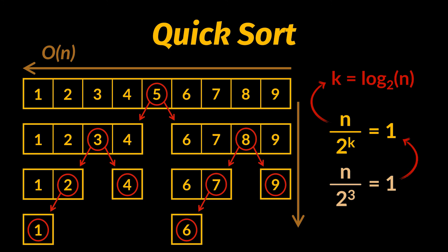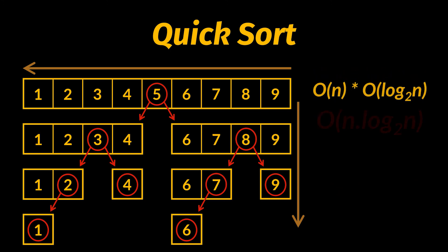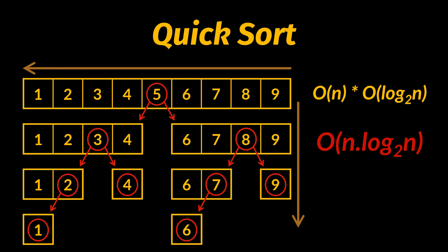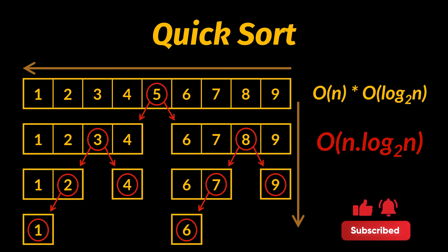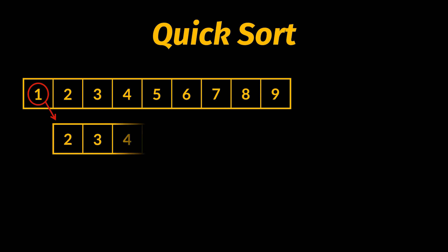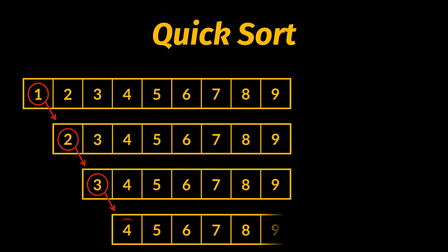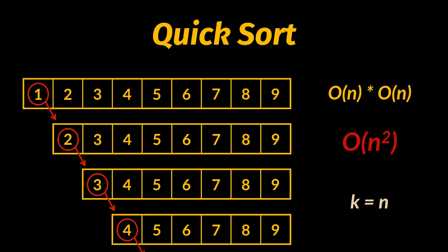However, this result depends on how the pivot is chosen. If instead we always pick the first or last element as the pivot, the partitioning becomes unbalanced and the number of partitions k becomes O(n), leading to a worst case complexity of O(n²). That is why you should always select the middle element or a random element as your pivot.